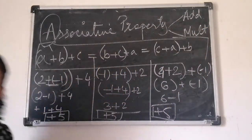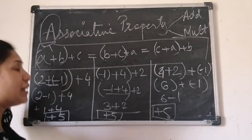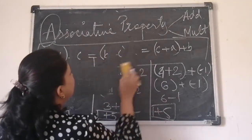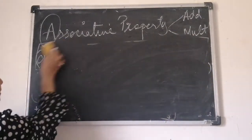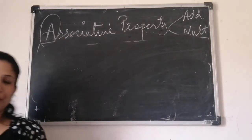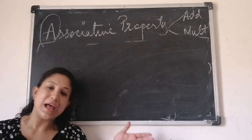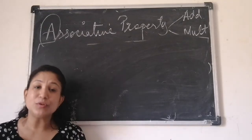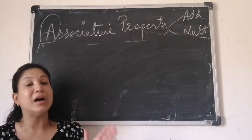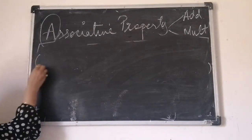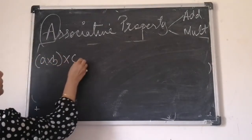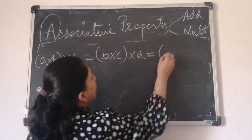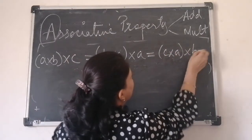Now let us understand associative property of multiplication. This property is also the same — only the difference is instead of addition, we put multiplication sign, just like we did for commutative property. You take 3 integers and multiply in any order, you will get the same answer. So: (A × B) × C, or (B × C) × A, or (C × A) × B — the answer will be same.